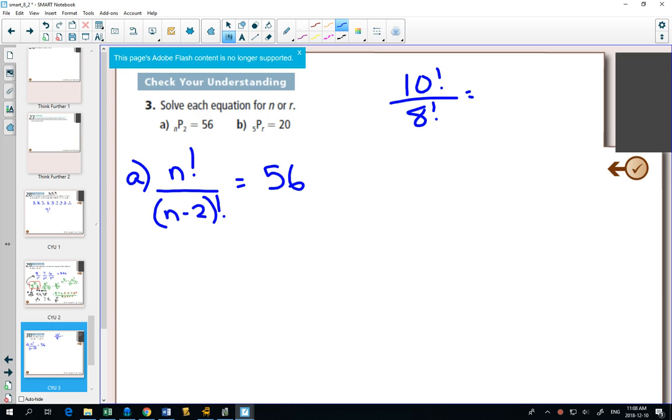Can you see that a lot of it would cancel out? And one of the things and one of the ideas that we use is if I wanted to simplify this without writing all the way down to 1, I start expanding the bigger one. 10 is obviously bigger than 8. And I go until I get to 8.